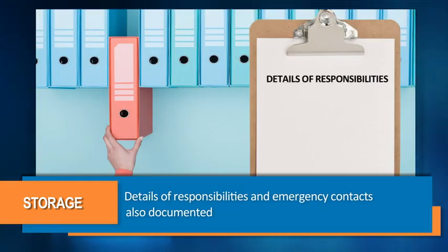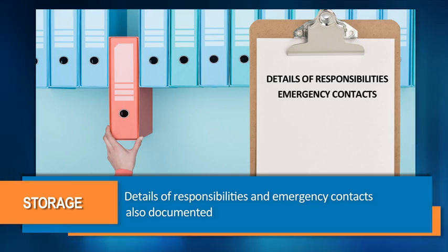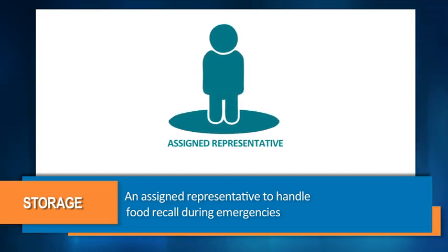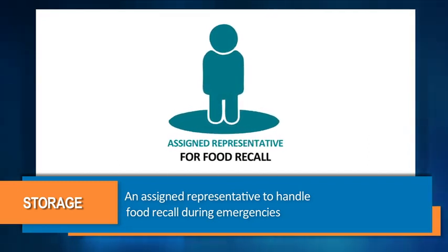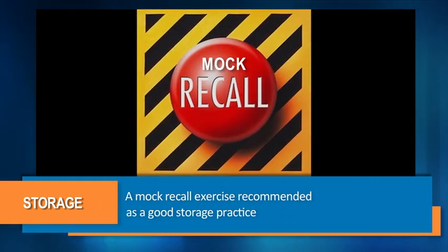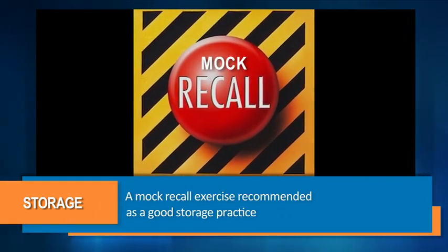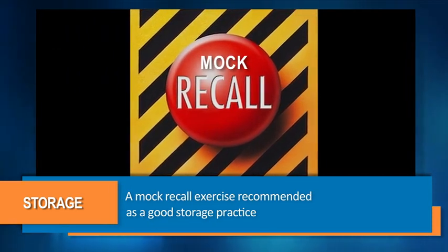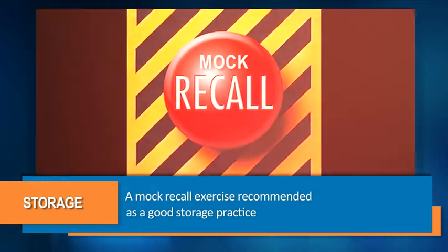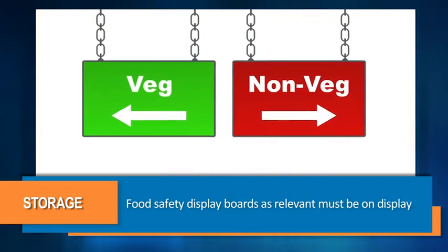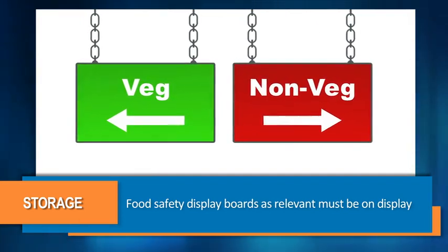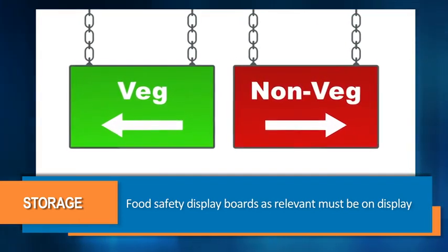Proper documentation shall be done of the written procedure for traceability and recall. Details of responsibilities and emergency contacts shall also be documented. There shall be an assigned representative to handle food recall during emergencies. A mock recall exercise is recommended as a good storage practice. Food safety display boards, as relevant, must be on display.